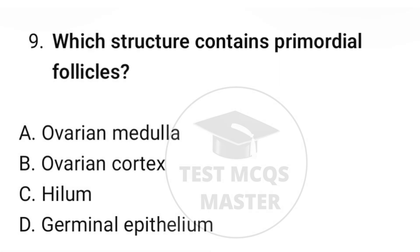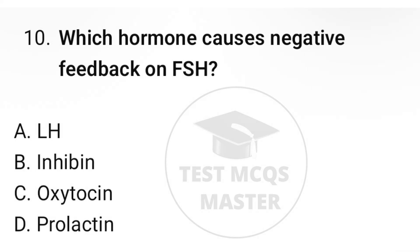Question number nine: which structure contains primordial follicles? The correct option is B, ovarian cortex. Question number ten: which hormone causes negative feedback on FSH? The correct option is B, inhibin.